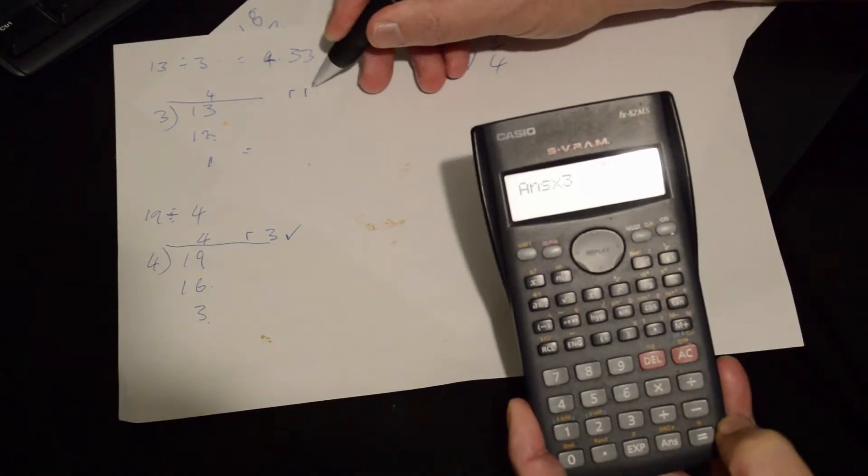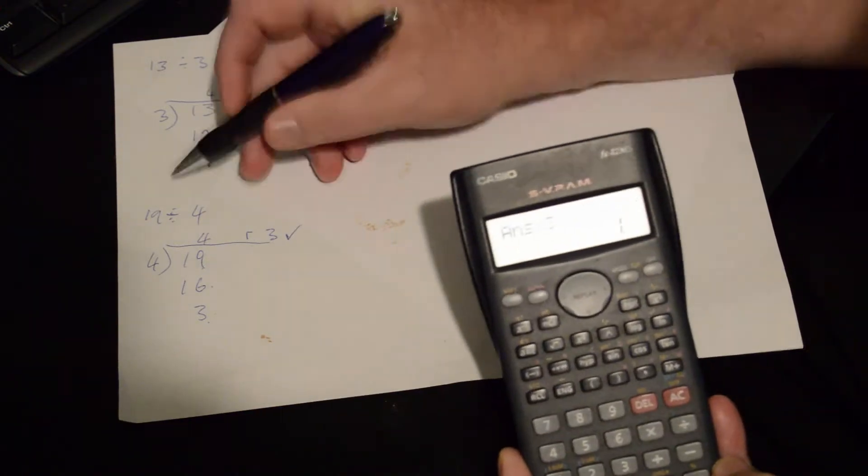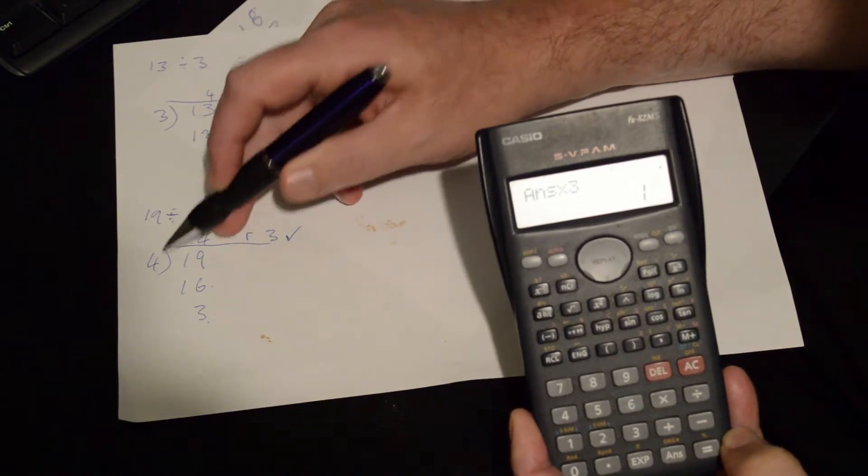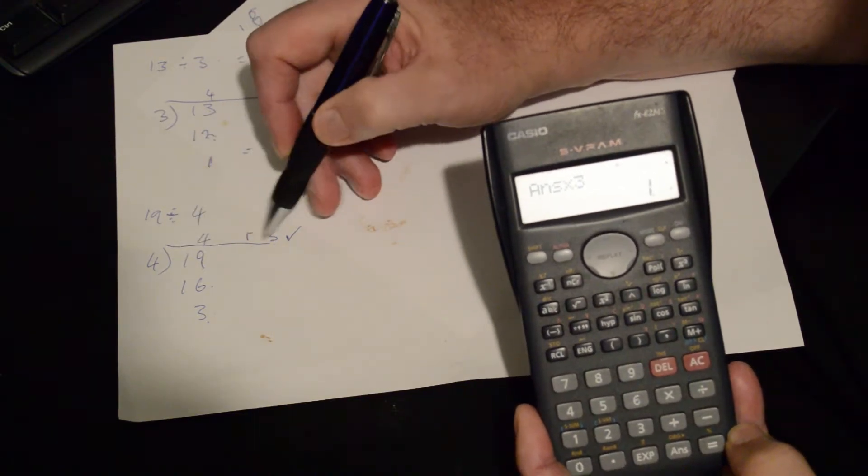So remainder 1. Now I'm going to do the same again. I'm going to give you another example here. That's 19 divided by 4. Okay, so we change that to 4 brackets 19.